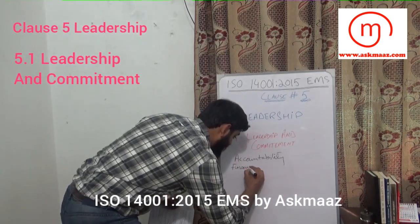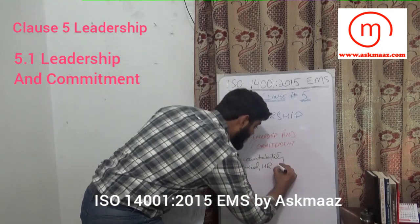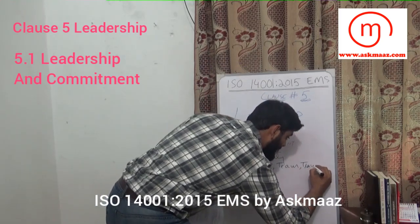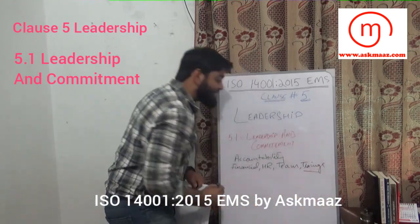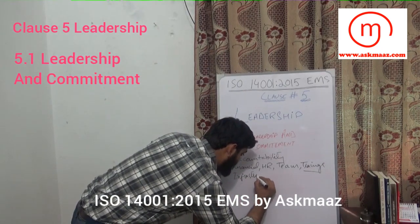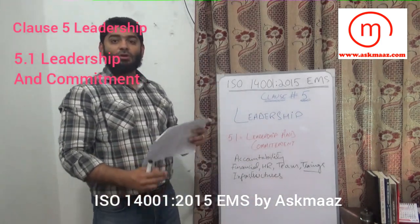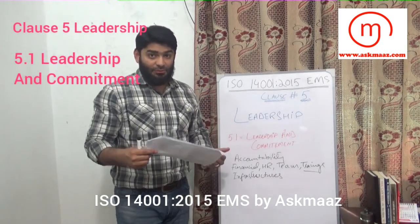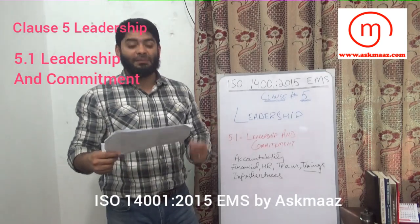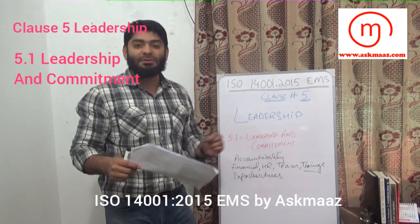Resources include financial resources, human resources, team, and trainings. These are all types of resources needed to effectively implement the environmental management system and achieve environmental objectives. Who can provide this? Leadership. If resources are not provided, then leadership has failed.